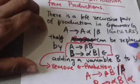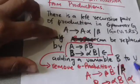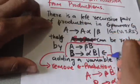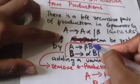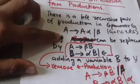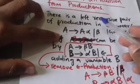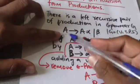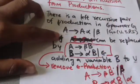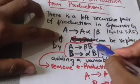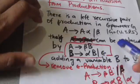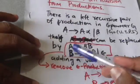To remove left recursion from these productions, we add a new variable B to set V and replace this pair of productions with the following: A derives beta B, B derives alpha B, and B derives the empty string. So the steps are: first, add variable B to set V; then replace the original productions with A derives beta B, B derives alpha B, and B derives the empty string in grammar G.